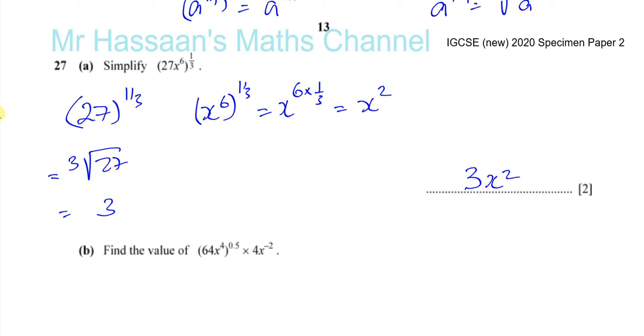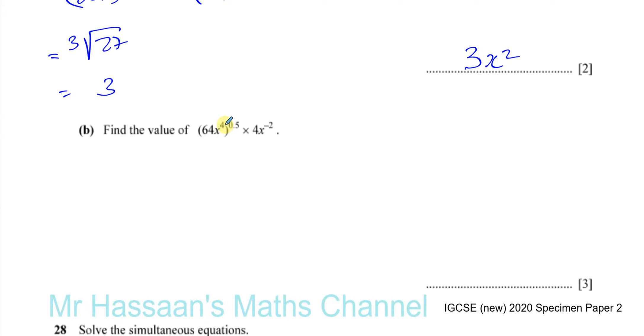It says find the value of 64x to the power of 4 to the power of a half times 4x to the power of minus 2. Again, I'll just do the same thing.